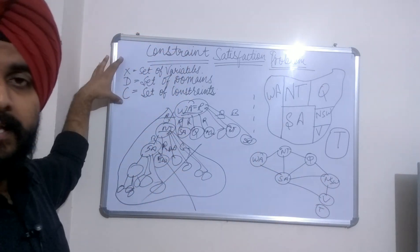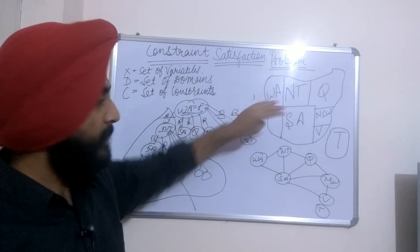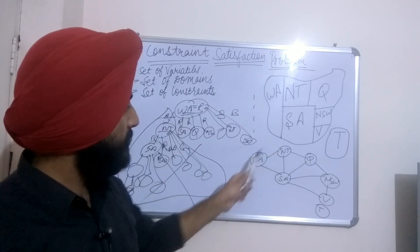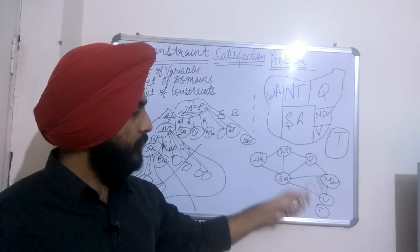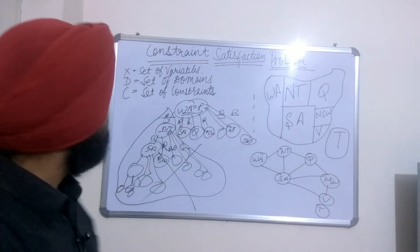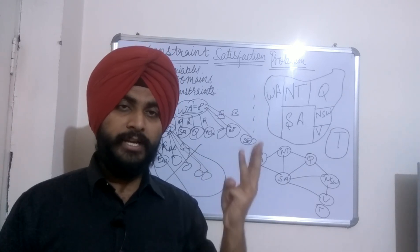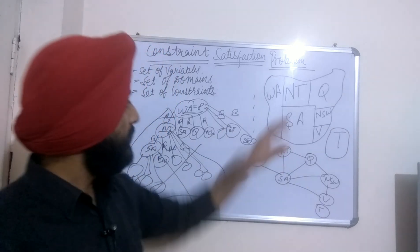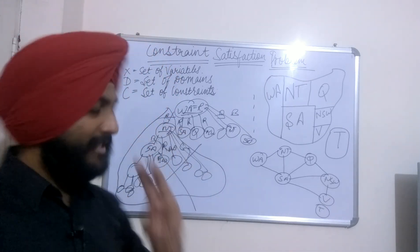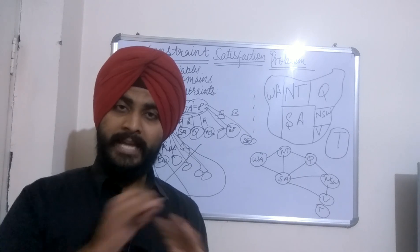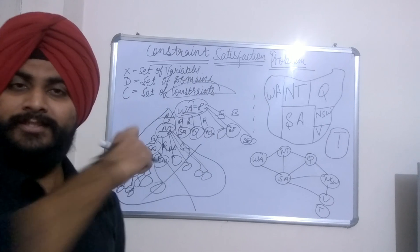Yeh teen cheezein likhi hain: X — set of variables. Is map coloring problem mein variables kaun se hain? Yeh sab variables hain — territories ke naam: Western Australia, NT, Southern Australia, Q — yeh sab set of variables hain. D — set of domains. Yahan domain kya hai? Red, blue, green — humne sirf teen colors liye hain jinse hum is map ko color karna chahte hain, toh woh hamare domains banenge. Aur teesri, sabse main cheez hai: aapka C — constraints.